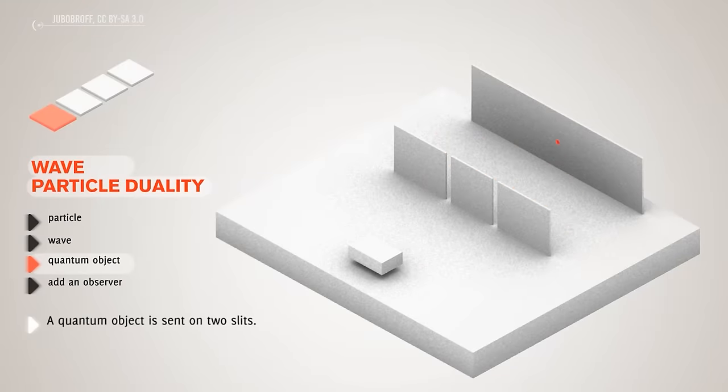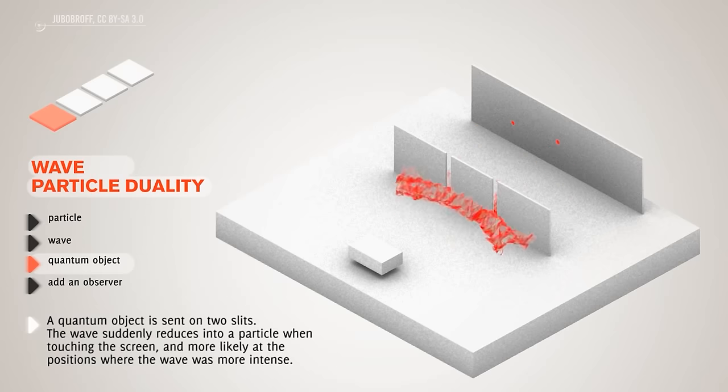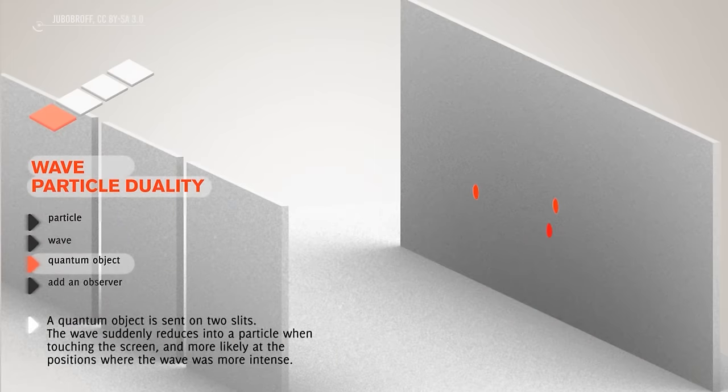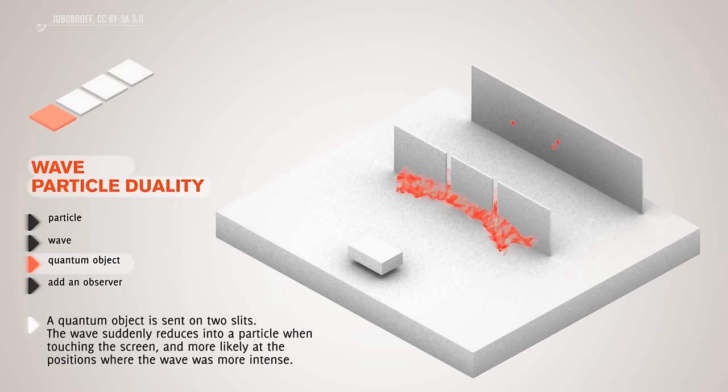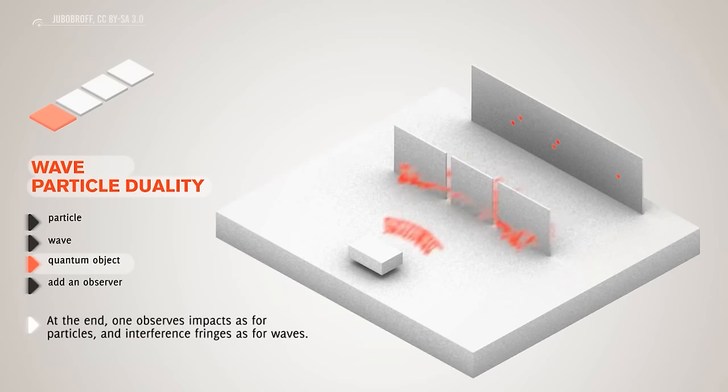Now, if you do the same thing with a beam of electrons, you would expect to see two rectangular strips on the second wall, as with the tennis balls, because they are particles.